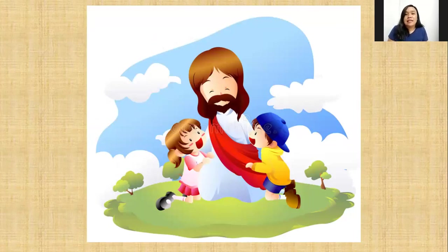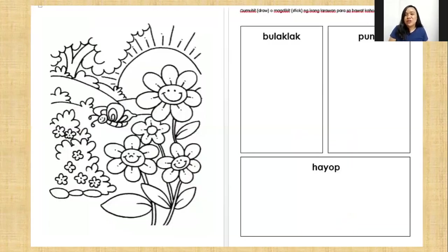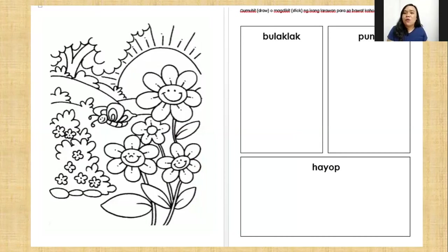One way that we can show Jesus that we are thankful is to take care of them. I hope you enjoyed our lesson today and you learned something new. For your activity, I want you to color very nicely that beautiful kapaligiran picture. For your next worksheet, I want you to draw — or you may cut out and paste — an example of a bulaklak, an example of a puno, and an example of a hayop. Good job for today, Kinder Two! Let's see what's next.